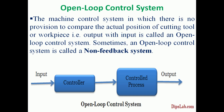Sometimes an open loop control system is called a non-feedback system. In the open loop control system, the input we give — in terms of machine movement or speed — goes through the controller and the control process to produce the output. The output, which is the movement or speed of the machine, is not compared with the input, and feedback is not given from this system.